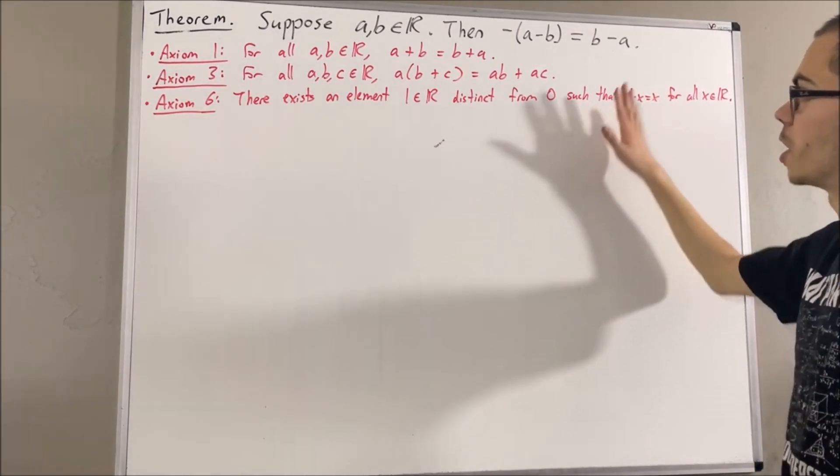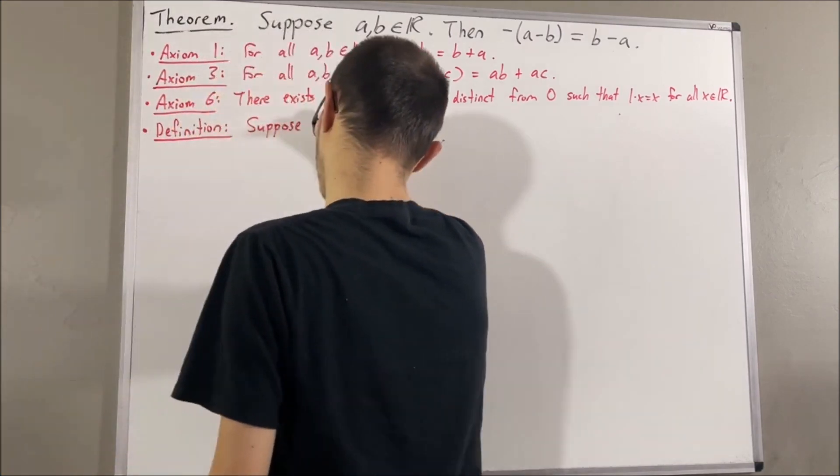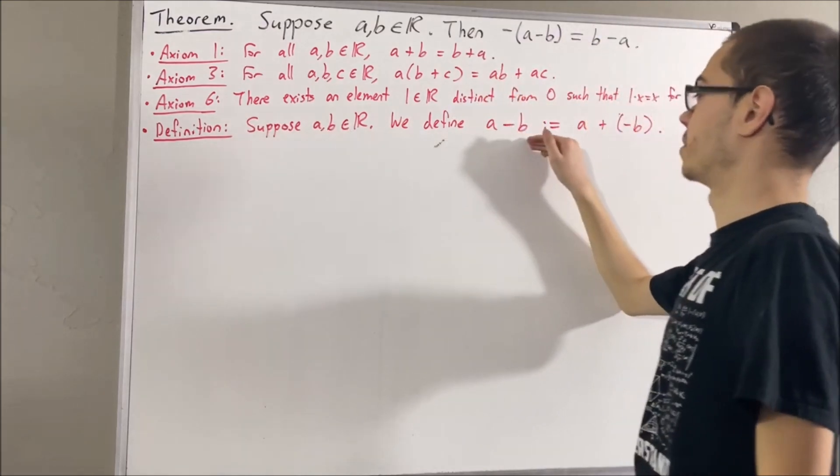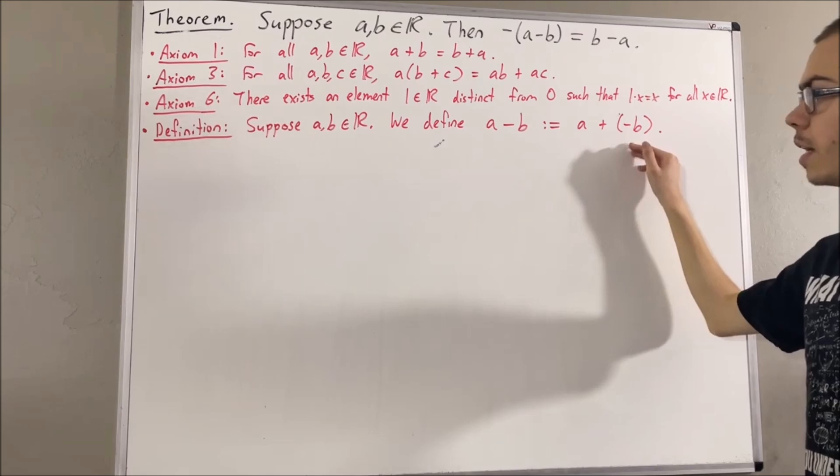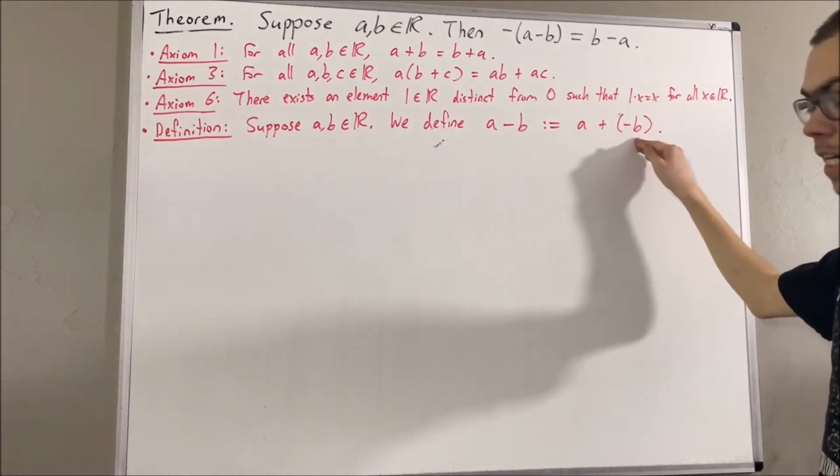Now our definition of subtraction is as follows. Suppose a and b are real numbers. We define a minus b to be a plus the negative of b. And axiom 5 introduces the concept of the negative of a real number.